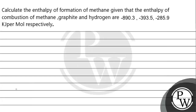Hello Bacho, let's read this question. The question says: calculate the Enthalpy of Formation of Methane, given that the Enthalpy of Combustion of Methane, Carbon (graphite), and Hydrogen are minus 890.3 kJ/mol, minus 393.5 kJ/mol, and minus 285.9 kJ/mol respectively.